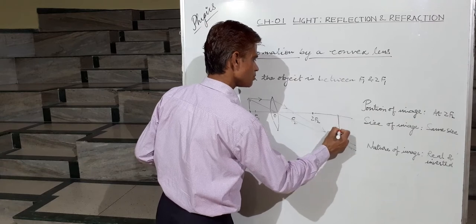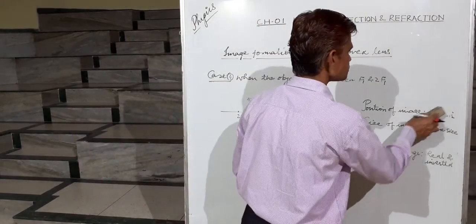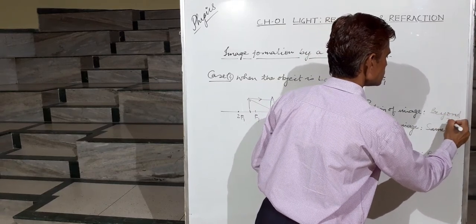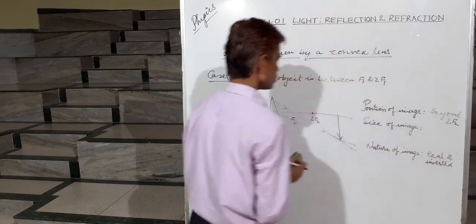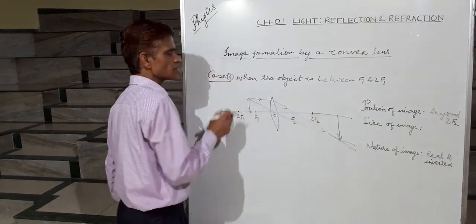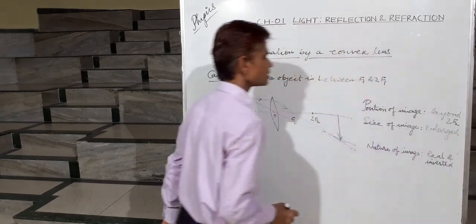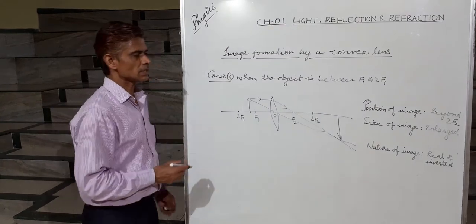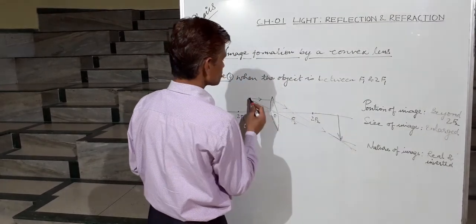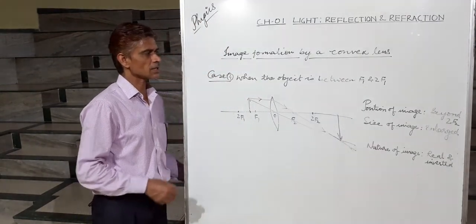We observe that these two rays meet at a point beyond 2F2, so the image is formed beyond 2F2. The size of the image is larger than the object, so the image is enlarged. Real rays are meeting, and the image is inverted, so a real and inverted image is formed.